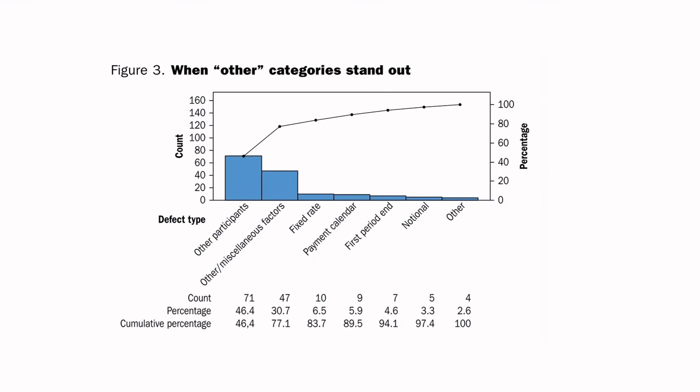A third common mistake: when people are collecting tally sheets for defects, they often make a box called 'other,' and sometimes 'other' ends up being the dominant defect. In this case study, 'other participants' and 'other miscellaneous factors' were the dominant factors — and how do you characterize that? If you start to see a trend where people are using 'other' in data collection rather than properly characterizing the defect, you've got to take the time to ensure that in your data collection tools you have the right categories. 'Other' doesn't give you any information.